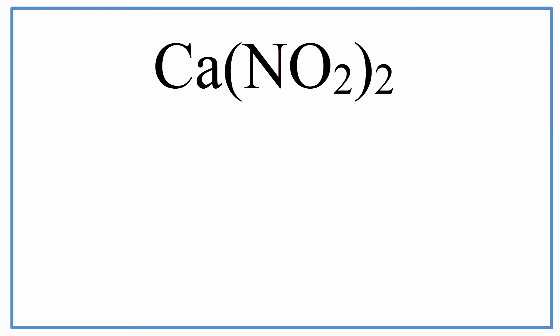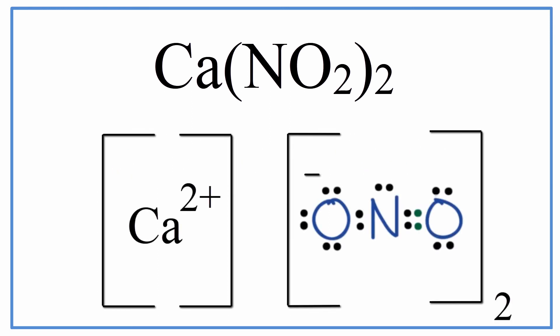We can represent this with a Lewis structure, and that might look like this. Note that calcium nitrite is normally found as a crystal, and that these are just representations of a single formula unit.